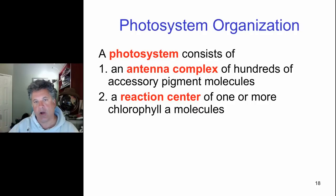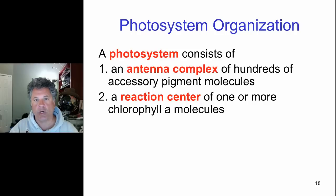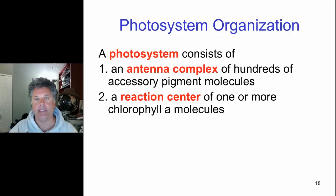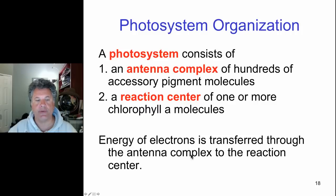The passing down of electrons will allow work to be done. That work, just like in cellular respiration, will be primarily the pumping of hydrogen ions across a membrane — in this case the thylakoid membrane, as we will see. So the energy of the electrons is transferred through the antenna complex to the reaction center.